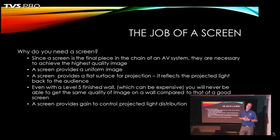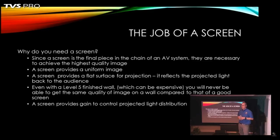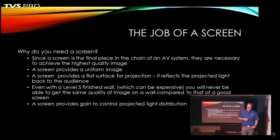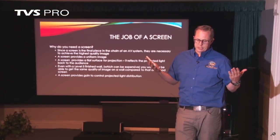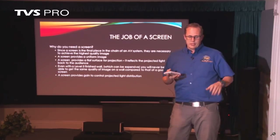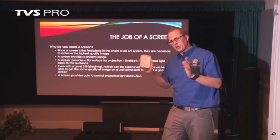What does the screen do? Basically a screen is the last piece in the chain of an audio-video system — they're necessary to really achieve the best image quality. A screen helps provide a uniform image, whereas if you're projecting on a wall that can be all over the place in terms of color, uniformity, and evenness of the image. A screen helps with that and reflects the projected light back to the audience evenly.